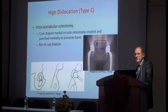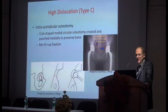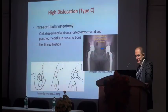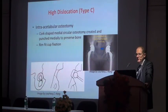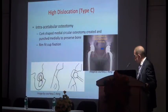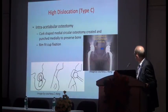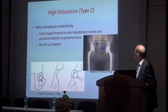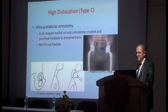With a high dislocation type C, you can also consider using an intra-acetabular osteotomy. These figures are from Zhang Hong, a colleague from Shanghai. The technique she uses is to ream down and then do a corkscrew-shaped circular osteotomy, punching in medially. This gives you a build-up of bone medially which remodels. I personally don't think you need to do that a lot, but she's very experienced, does a lot of cases, and it is a well-recognised technique.